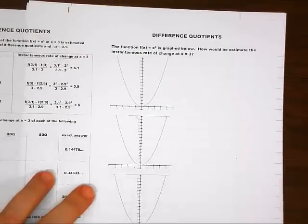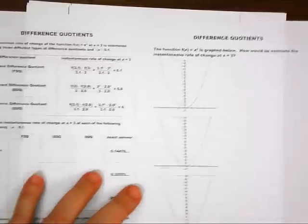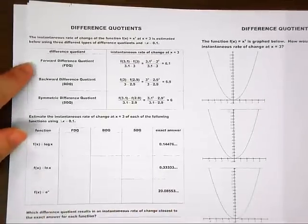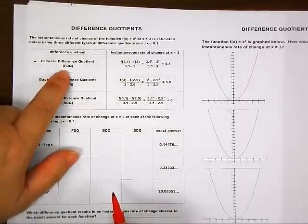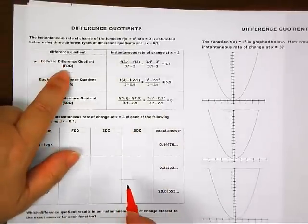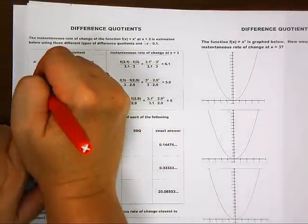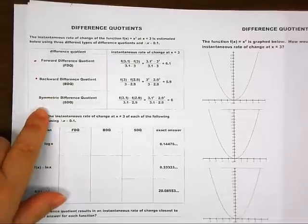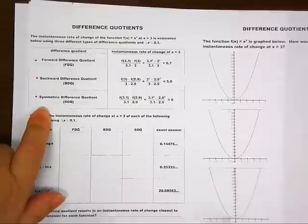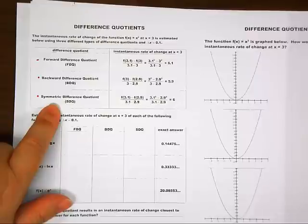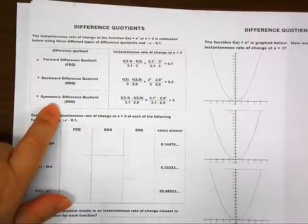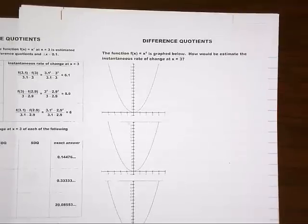For calculus purposes there are three different types of difference quotients. The forwards difference quotient, abbreviated FDQ; the backwards difference quotient, abbreviated BDQ; and the symmetric difference quotient, abbreviated SDQ. We'll give an example of each in theoretical formula form, then apply real values.